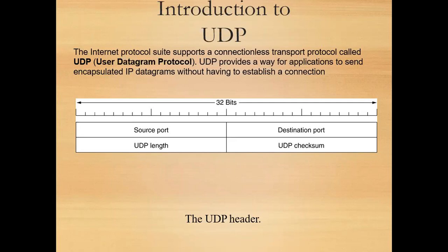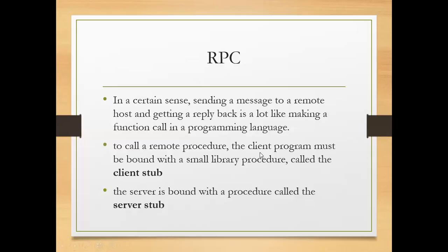The UDP header is 32 bits in length. What fields are in it? Source port, destination port, UDP length, and UDP checksum.